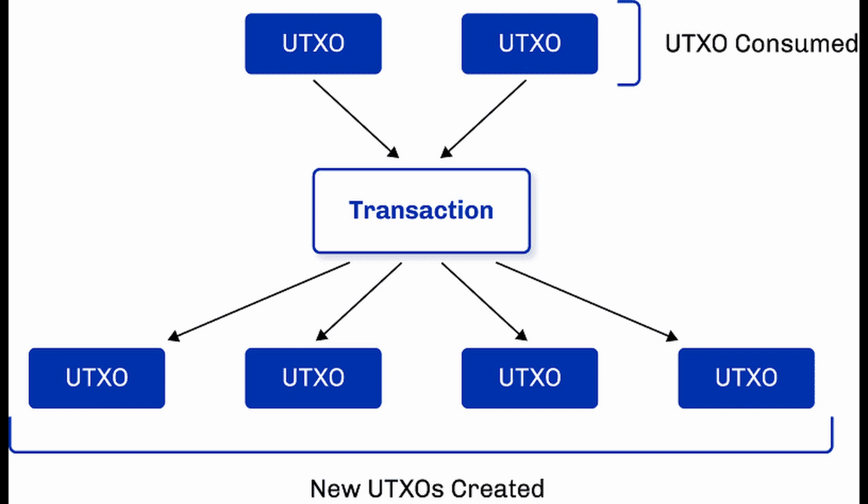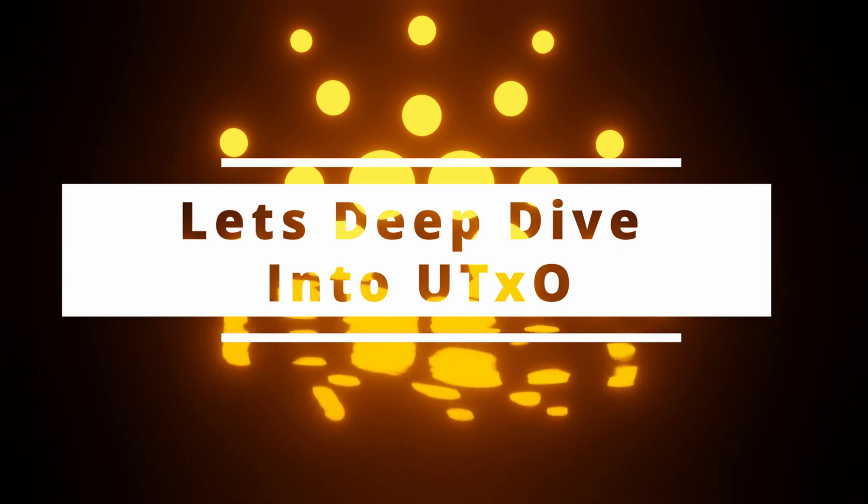As you can see, there are two UTXO inputs going into a transaction, and that transaction is creating multiple UTXO outputs. When an output is used in a transaction it becomes spent and cannot be used again. Let's deep dive into UTXO. We've got two people — Alice and Bob — the classic example.